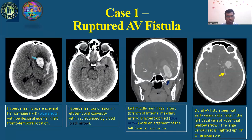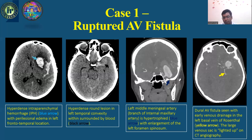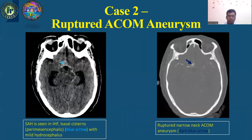Case 1 is a ruptured AV fistula. On NCCT head axial sections, we can see a hyperdense intraparenchymal hemorrhage shown by blue arrow with perilesional edema in the left frontotemporal location. A hyperdense round lesion is seen in left temporal convexity surrounded by black blood shown by black arrow. The left middle meningeal artery, a branch of the internal maxillary artery, is hypertrophied shown by blue arrow with enlargement of the left foramen spinosum. A dural AV fistula is seen with early venous drainage in the left basal vein of Rosenthal shown by yellow arrow. Case 2 shows a ruptured narrow-neck ACOM aneurysm on NCCT head, shown by dark blue arrow.